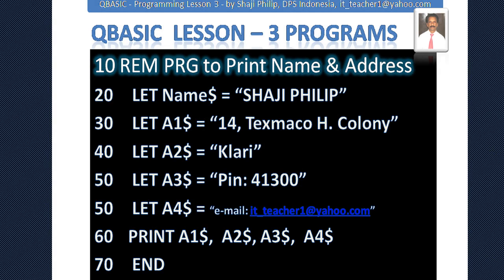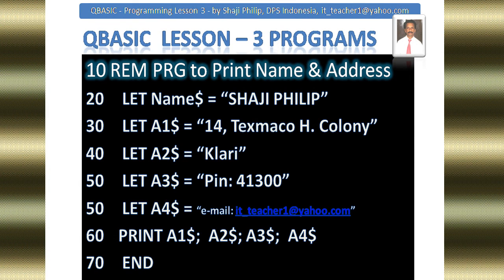Try using semicolons instead of commas between the variables in line number 16 and see what happens. If you use semicolons, the answers will be printed in a single line. If you want the answers printed on separate lines, try it out and find what you need to do. Here I have shown the same program with semicolons instead of commas — notice that the name is still not printed, so you should fix that.